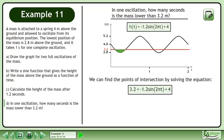We can find the points of intersection by solving the equation 3.2 equals negative 1.2 sine 2πt plus 4.